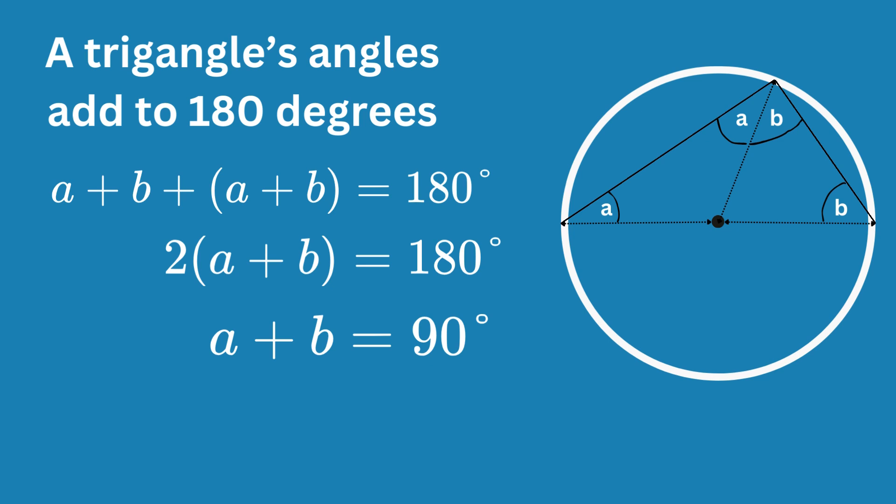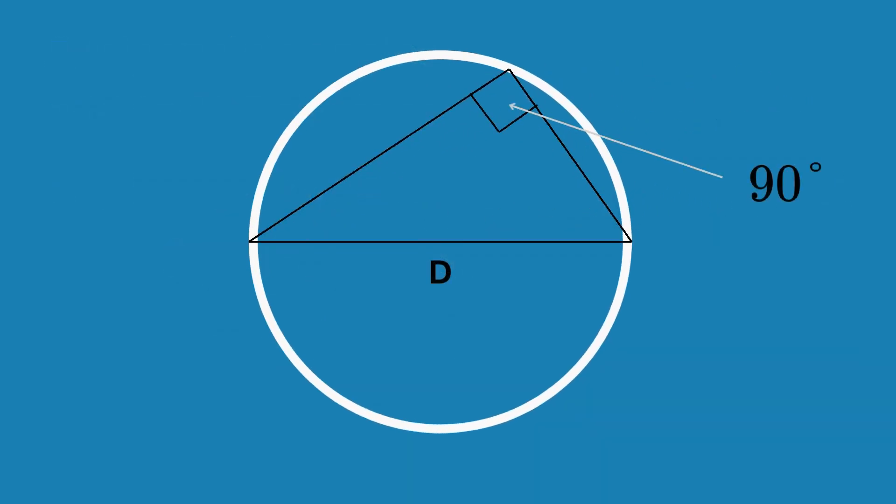Since a plus b equals 90 degrees, and the top angle in our triangle is a plus b, the top angle must always be a right angle.